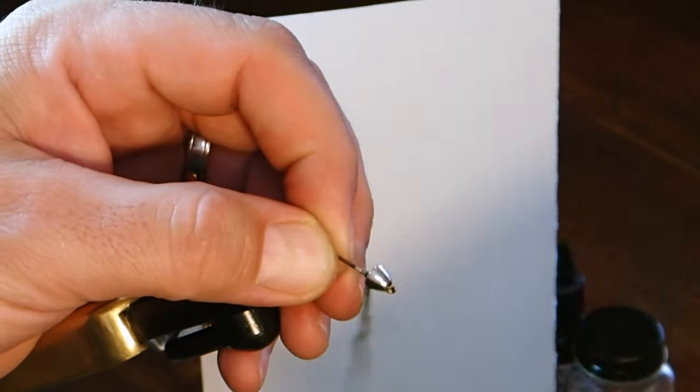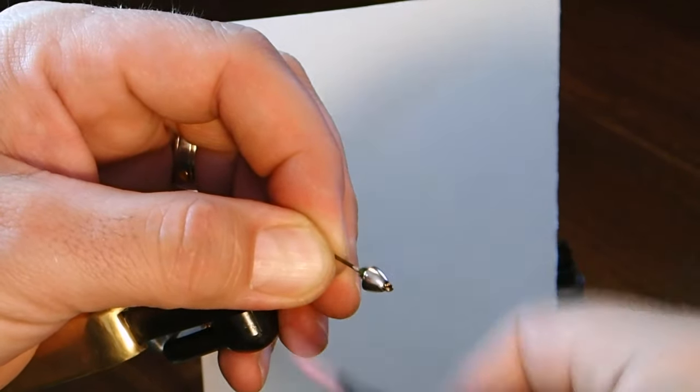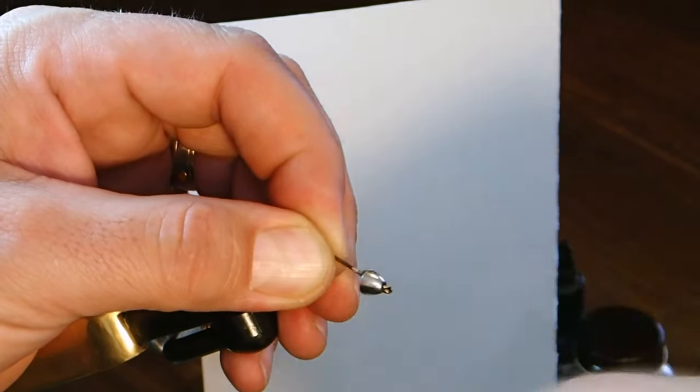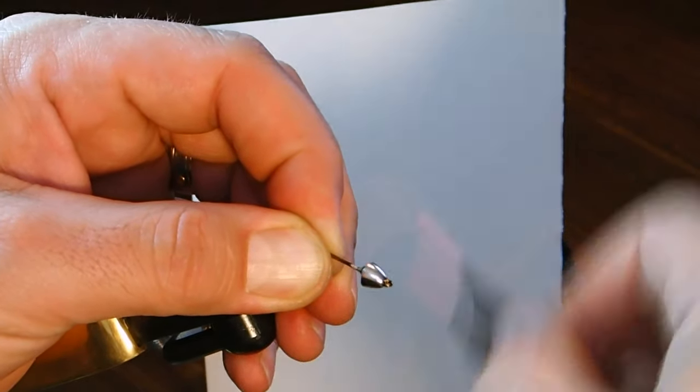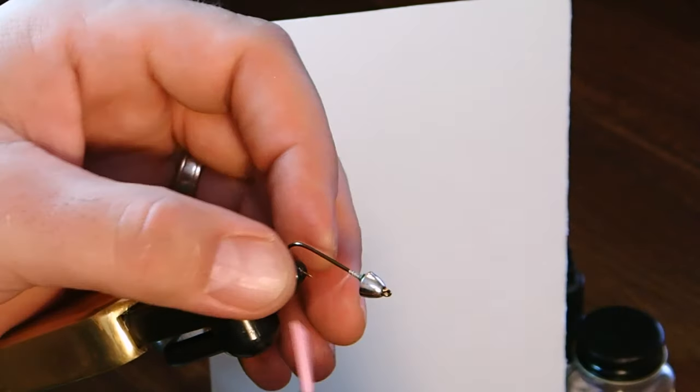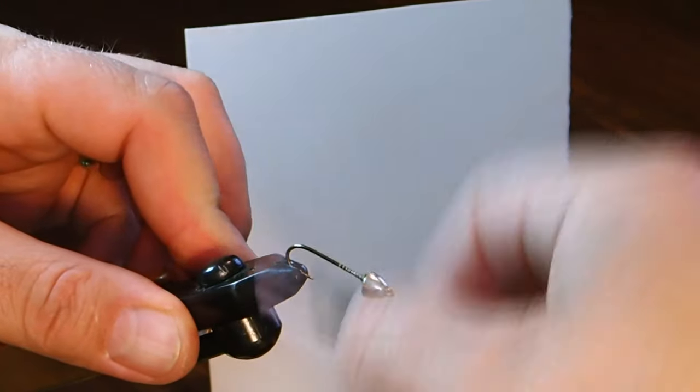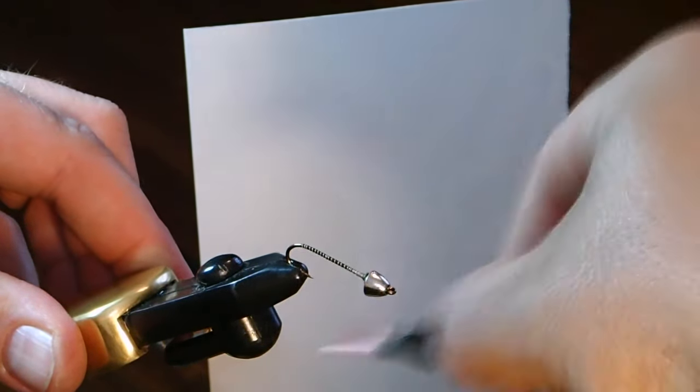So we'll throw some dubbing behind that bead. A few wraps here. And then just lock it down with some more wraps. And then we'll just run the thread back on the hook shank to the bend. Make sure that bead's tight first. I'm just going to run this back all the way to the bend here.